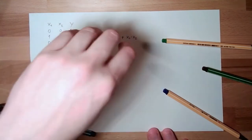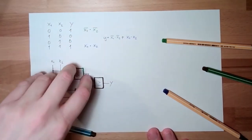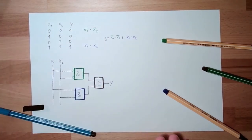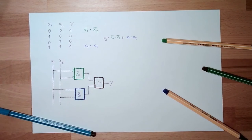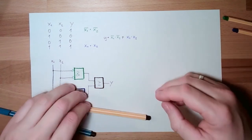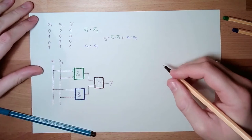Table of truth, equation, logic circuit. That's it. I mean, it's easy, right? It's not that difficult. Let's maybe try another example.